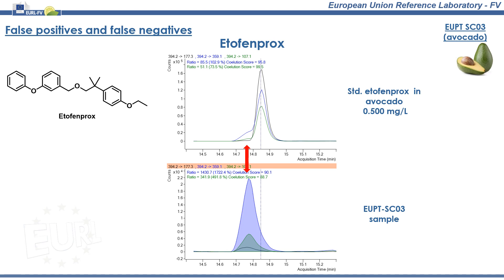Perhaps, in the case of the reporting laboratory with slightly different chromatography, the same retention time. This matrix interference shared at least three mass transitions with etofenprox, although the ion ratio did not match whatsoever that of etofenprox. And, even in the case of perfect co-elution, due to the ion ratio differences, this peak should not be reported as etofenprox.